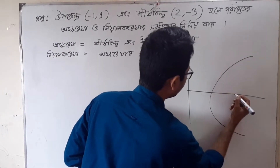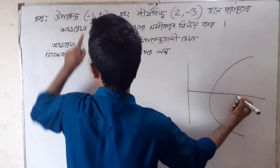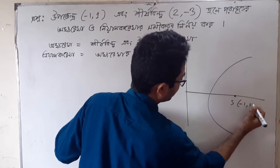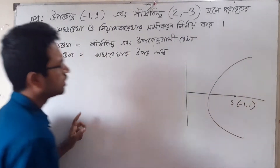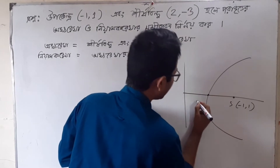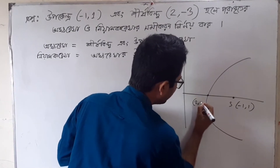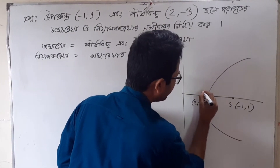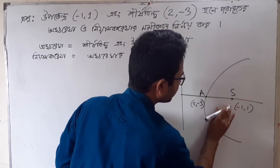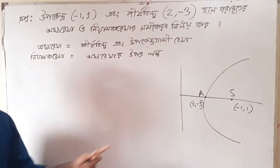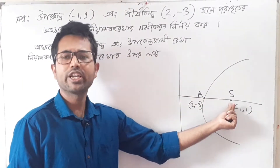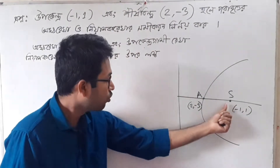So, this is the up-kendro minus 1, 1. And the root of the root is this root. And then 2 minus 3. The root of the root of the root is this. This root is S. So, let's do this. The root of the root root is the 1 root.